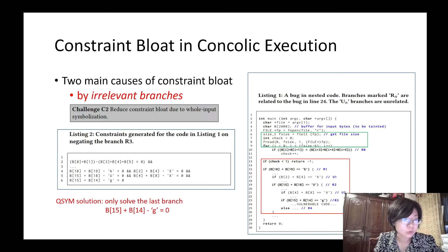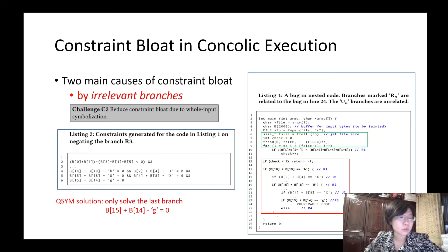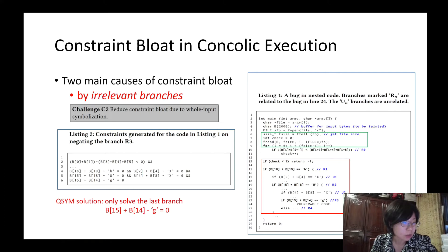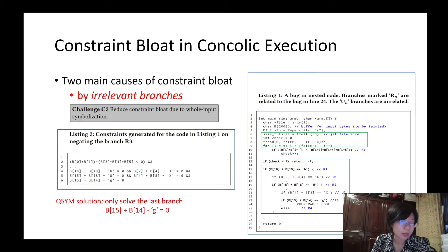For the second cause, constraint bloat introduced by irrelevant branches. Current concolic execution solutions symbolize the entire input and emulate all instructions that operate on symbolized bytes. However, not all branches are relevant to the target branch. If we consider branch R3 as our target branch to reach the vulnerable code, in particular, U1 and U2 are not important for the outcome of R3. Therefore, extra constraints are introduced. Besides, the loop in the green square introduces large amounts of constraints which do not directly contribute to the target branch.